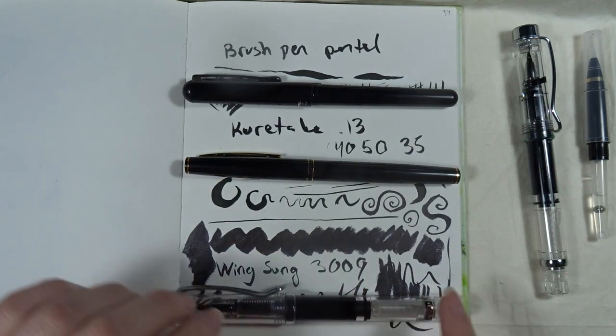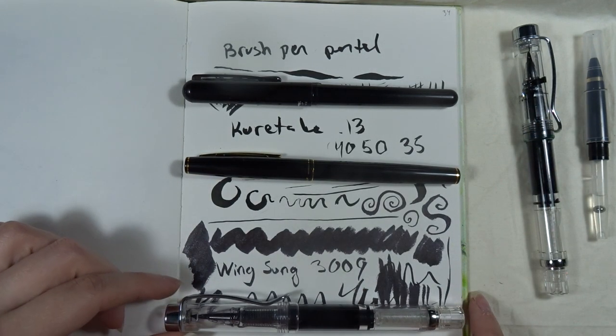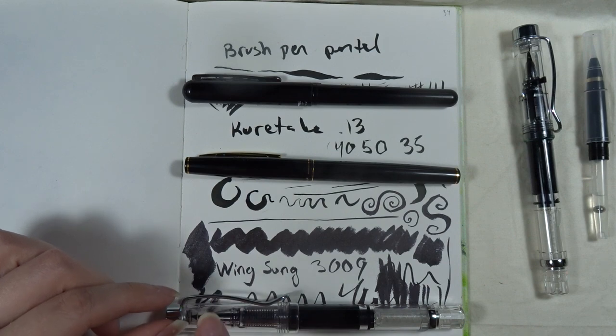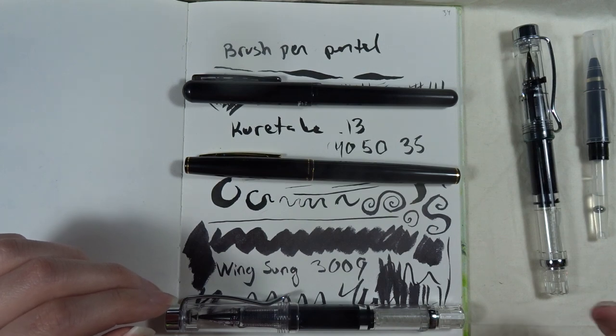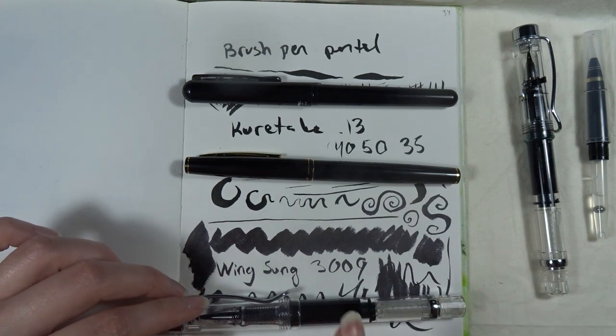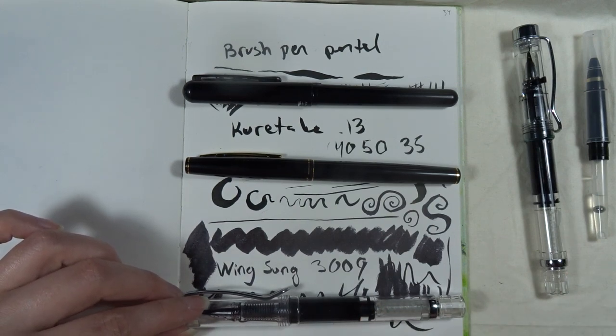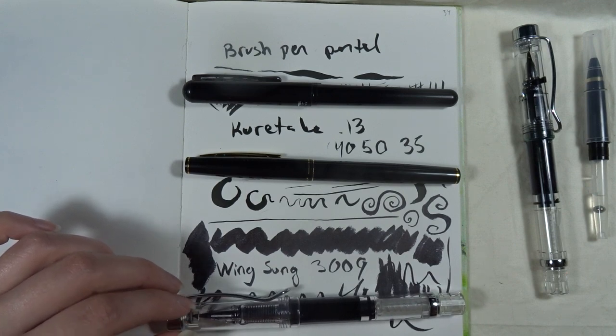Then there's this non-branded Chinese one that you can probably find under name Wingsound 309, or you can just search brush head fountain pen piston or something like that and find it on eBay. Also, you can find it probably on Amazon as well.